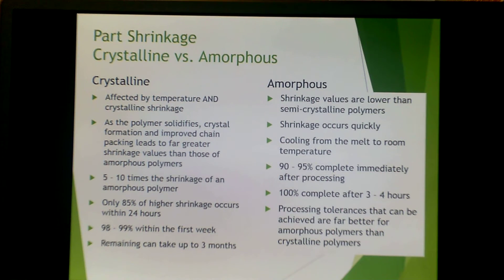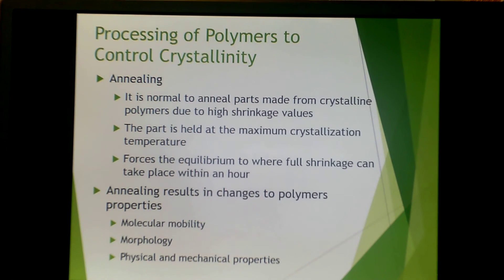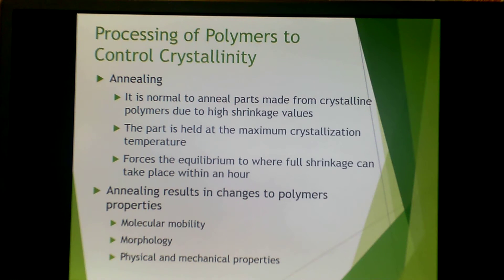Part shrinkage is a huge consideration when making actual parts. With a crystalline part, you're affected not only by temperature but by crystalline shrinkage. As the polymer solidifies, crystalline formation and improved chain packing leads to far greater shrinkage values than amorphous polymers — up to five to ten times the shrinkage value. About 85% of the higher shrinkage occurs within 24 hours, and about 98–99% within the first week, but without intervention it can take up to three months for a semi-crystalline polymer to completely crystallize. One solution is to anneal: the part is held at a maximum crystallization temperature, forcing full shrinkage to occur within an hour. Annealing results in changes to polymer properties like molecular mobility, morphology, and physical and mechanical properties.